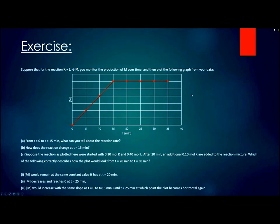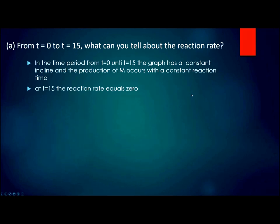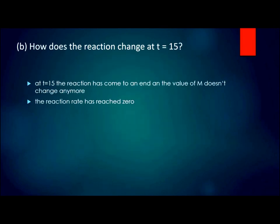For question a, from t0 to t15 minutes, the graph has a constant incline and the production of M occurs with a constant reaction rate. At t15 the reaction rate equals zero. For question b, at t15 the reaction has come to an end and the value of M doesn't change anymore, so the reaction rate has reached zero.